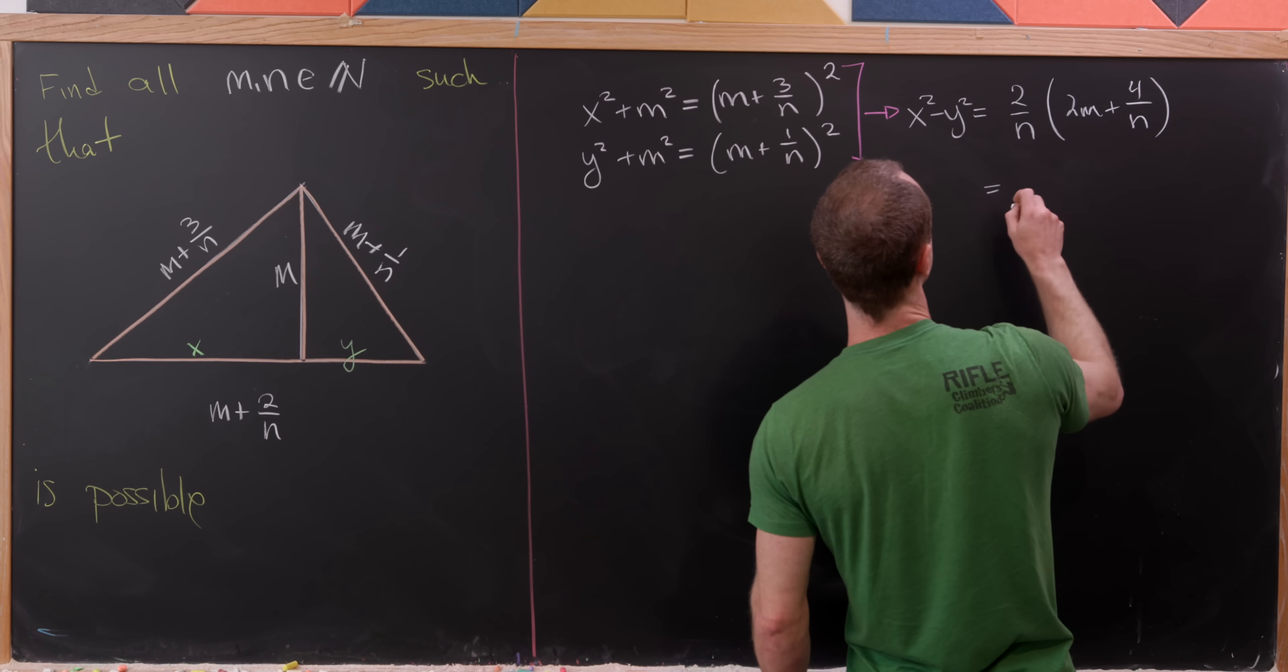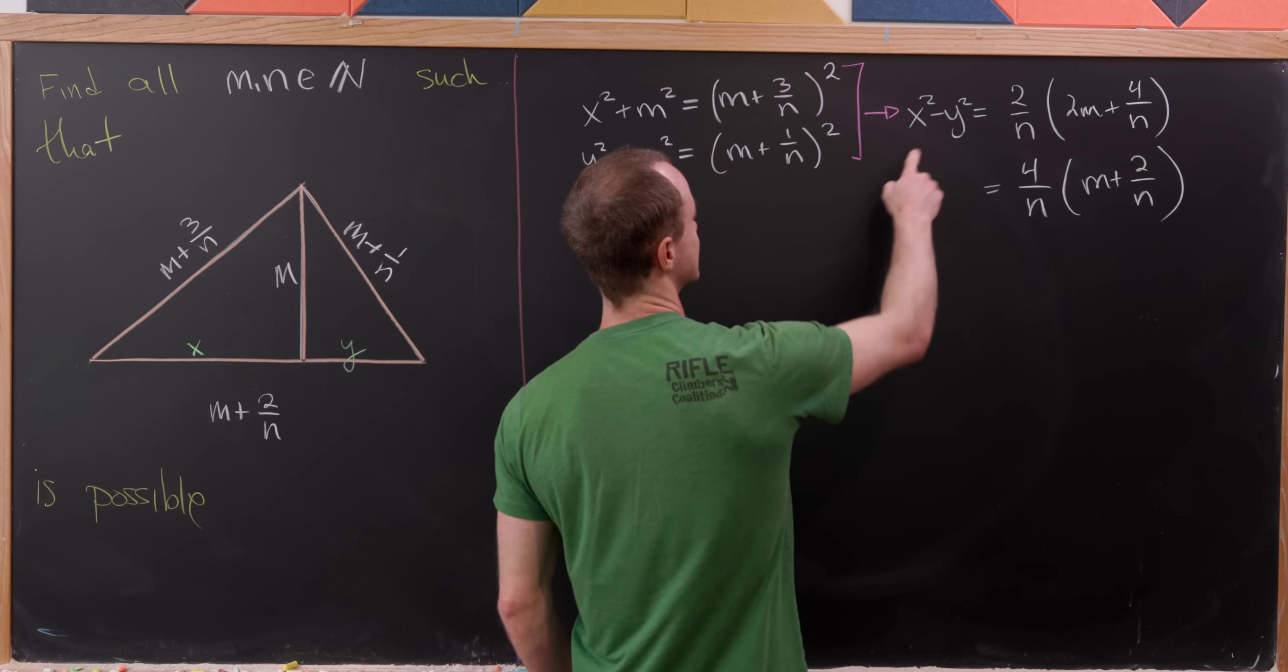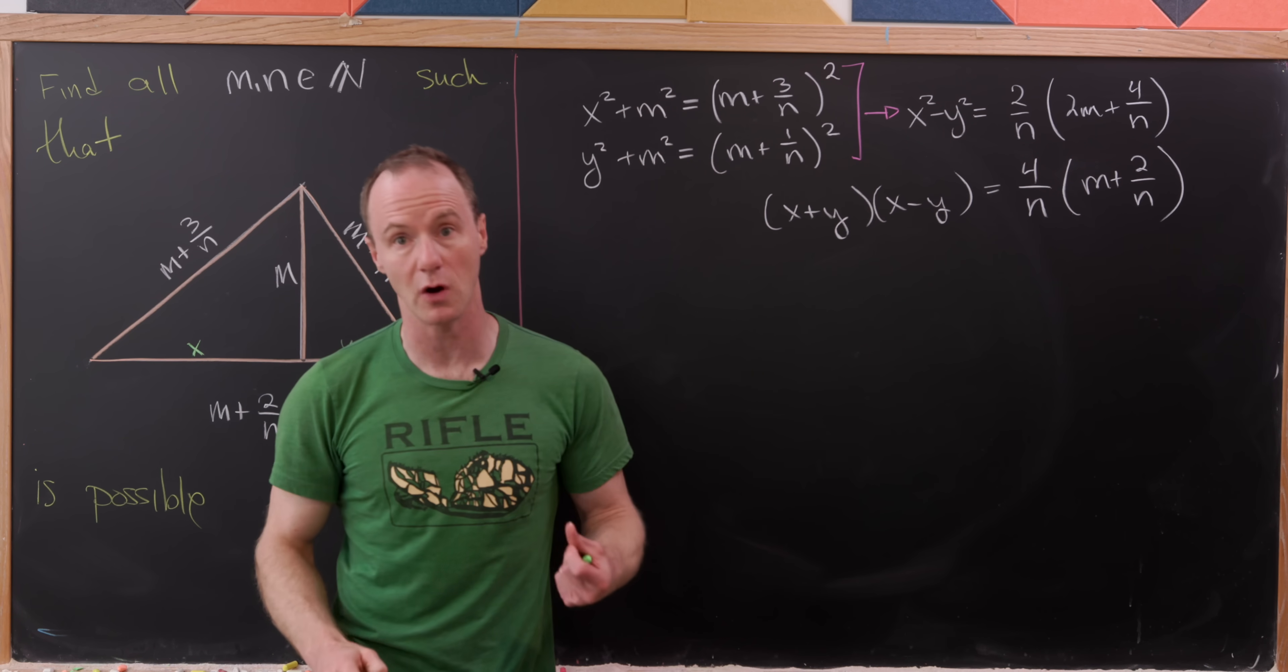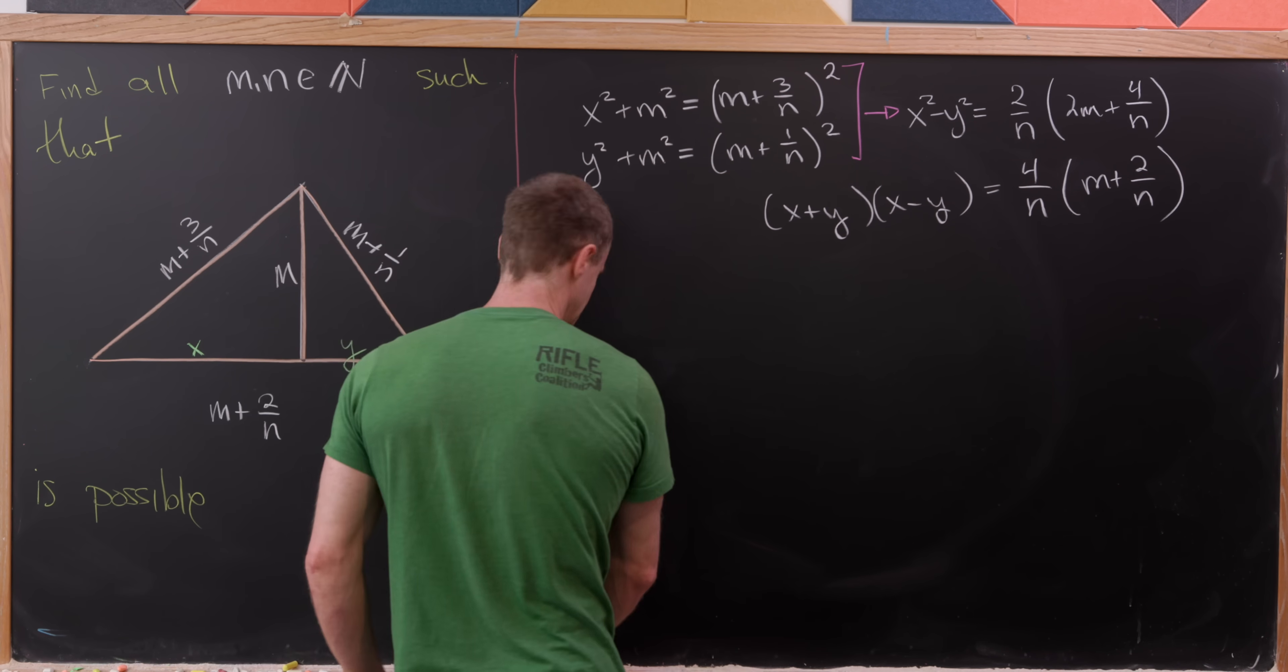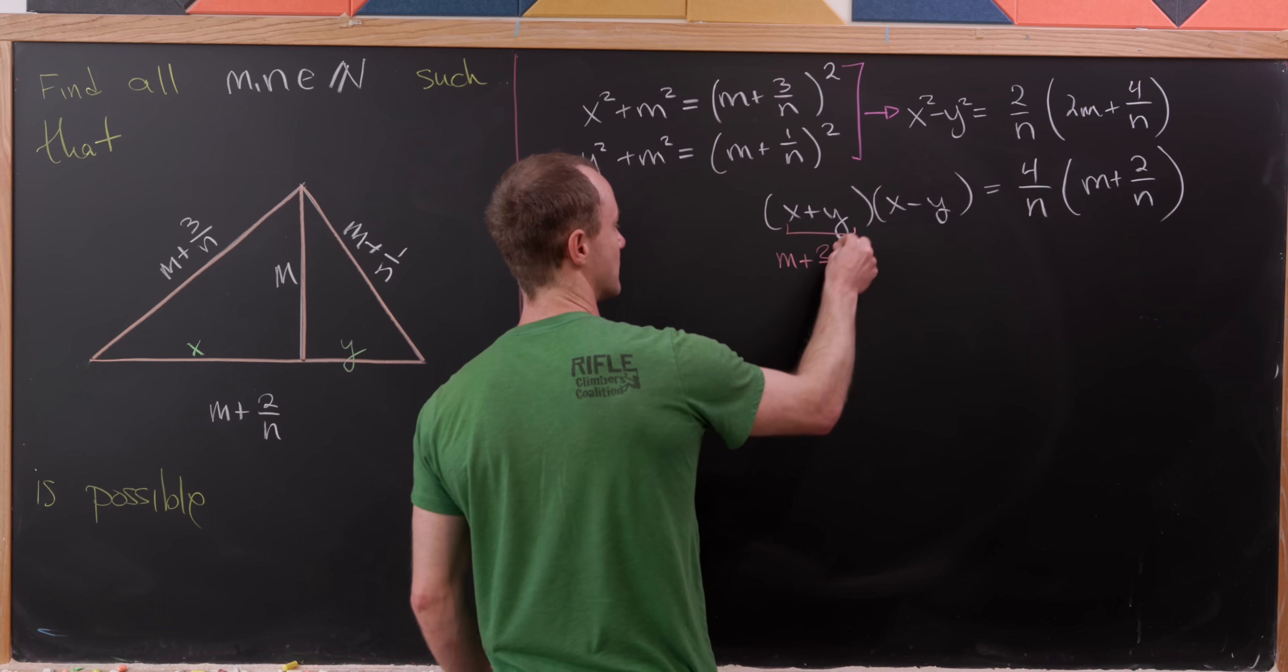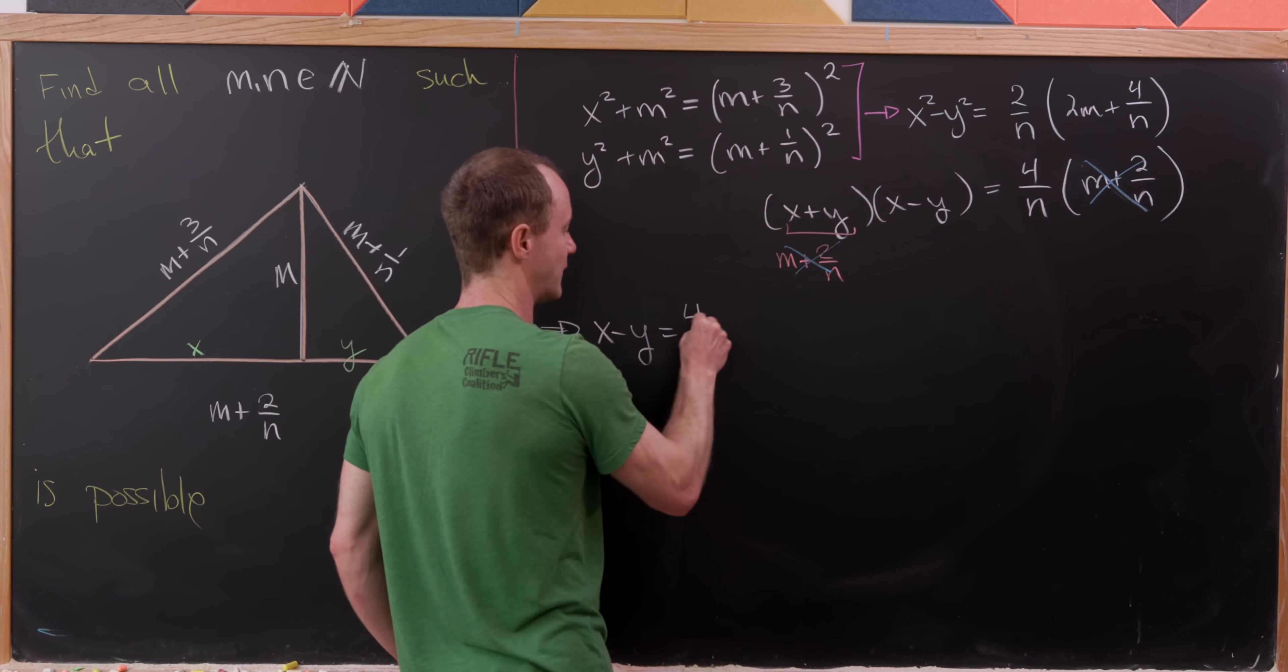Of course, we can factor some stuff out here, and we'll have 4 over n times m plus 2 over n. And furthermore, we can maybe factor out this left-hand side as x minus y times x plus y. But now, let's observe that x plus y is simply m plus 2 over n, given that x and y form two pieces of the bottom of this triangle. So that means we can go here and take this x plus y and write it as m plus 2 over n. But now, we can take this m plus 2 over n and this m plus 2 over n on both sides of the equation and simply cancel them. So we're just dividing the entire equation by that. And this gives us this nice expression of x minus y equals 4 over n.